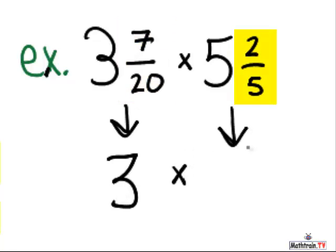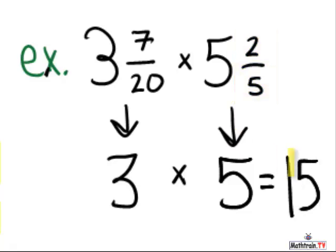5 and 2 fifths - the 2 fifths is also less than 1 half, because 1 half would be 2.5 fifths, but it's 2. So that's less than 1 half, so you round that down to 5. 3 times 5 is 15, and there's your answer.